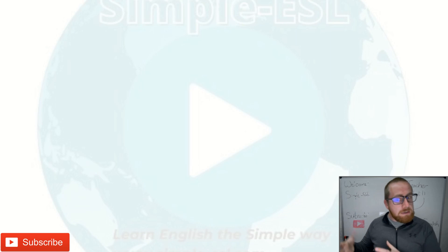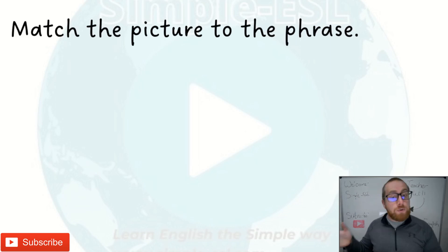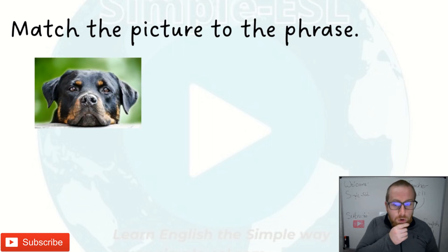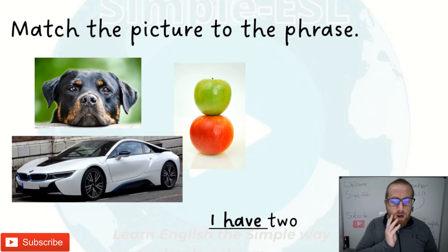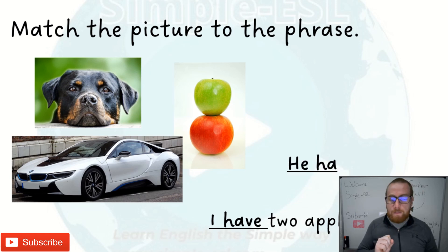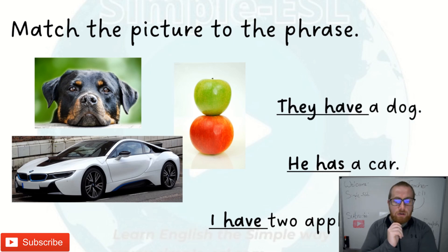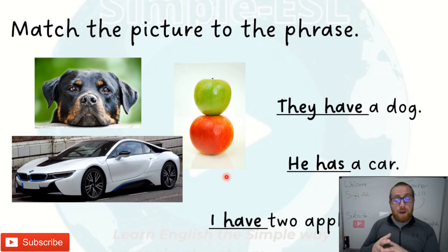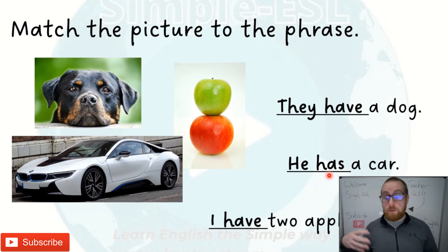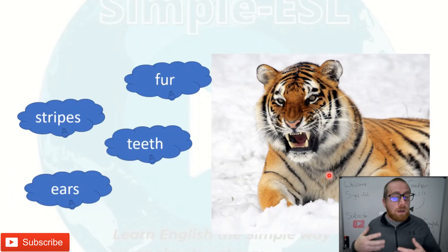We're going to practice and then have a go making our own statements. First, let's match the picture to the phrase: a dog, some apples, a car. I have two apples. He has a car. They have a dog. Very simple, and we can see how the verb 'have' changes depending on the pronoun.